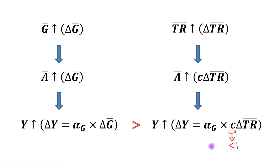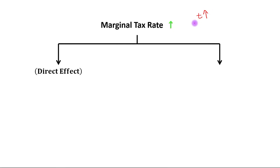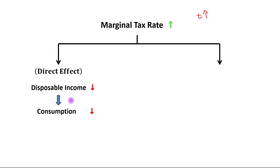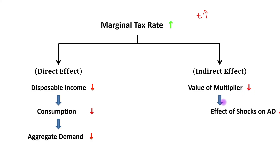Now suppose the government increases the marginal tax rate. The direct effect is that disposable income is reduced, which reduces consumption since consumption depends on disposable income, and finally aggregate demand is reduced. The indirect effect is that the value of the multiplier goes down, which implies the effect of shocks on AD will be lower.